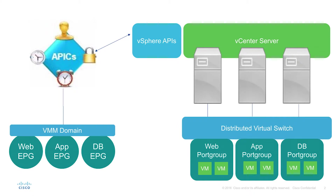You need to use vCenter or some cloud management tool like vRealize to provision VMs and place them in the correct port groups. And finally, we can apply policy between these port groups, which gets applied to the VMs.